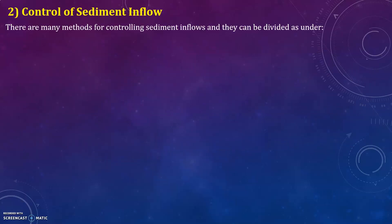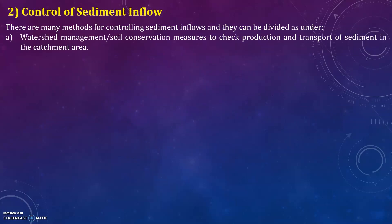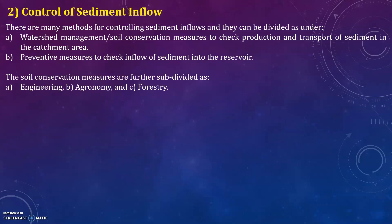The second method is control of sediment inflow. There are many methods for controlling sediment inflows, divided into two categories: first, watershed management or soil conservation measures to check production and transport of sediment in the catchment area; and second, preventive measures to check inflow of sediment into the reservoir.